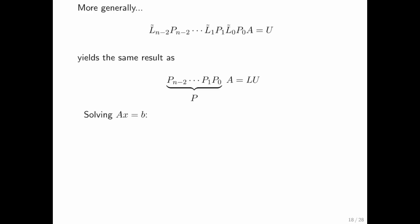What this means is that if you want to solve Ax equals b, what you want to do is apply the same permutations to the right hand side as you did to the matrix A. That way the equality remains because you've multiplied both sides by the same matrices from the left.